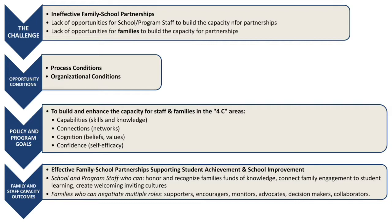With a full understanding of our opportunity conditions, we can then go on to making policy and program goals. Our goals are to build and enhance the capacity for staff and families in the four C areas: capabilities, connections, cognition, and confidence. From these policy and program goals, we then hope to achieve family and staff capacity outcomes — effective family-school partnerships supporting student achievement and school improvement, where school and program staff can honor and recognize family funds of knowledge, connect family engagement to student learning, and create welcoming, inviting cultures. Through this, we also have families who can negotiate multiple roles as supporters, encouragers, monitors, advocates, decision makers, and collaborators.